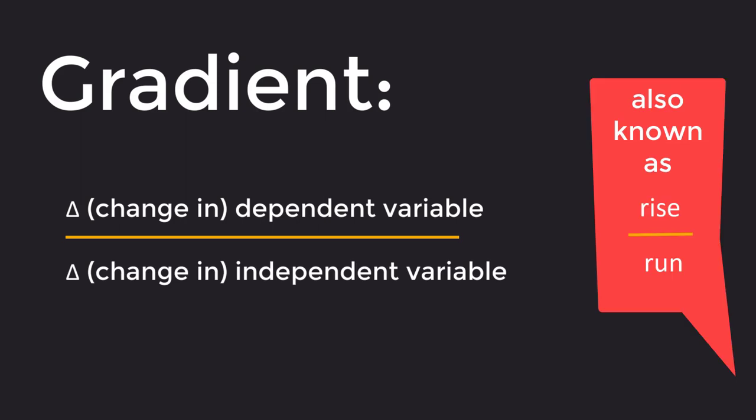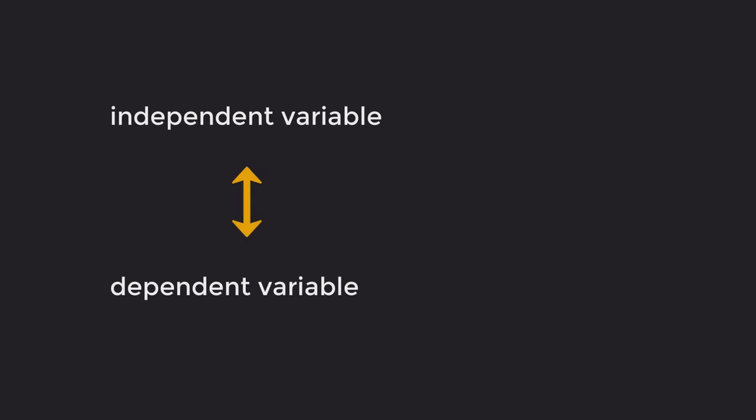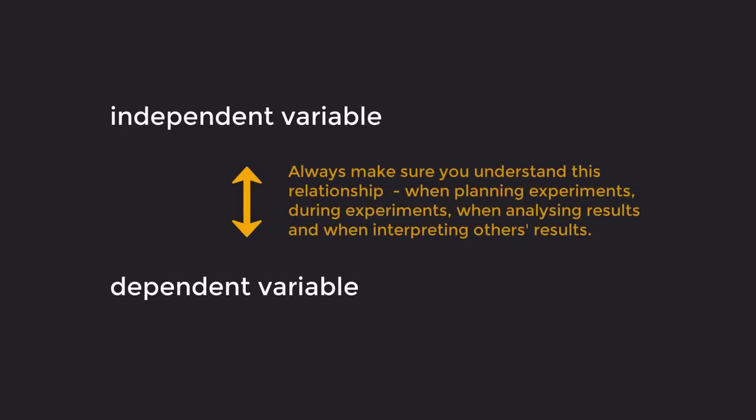Understanding the relationship between the dependent and independent variables is important when planning your experiments, during them, when drawing a graph, and when interpreting the data from any graph.